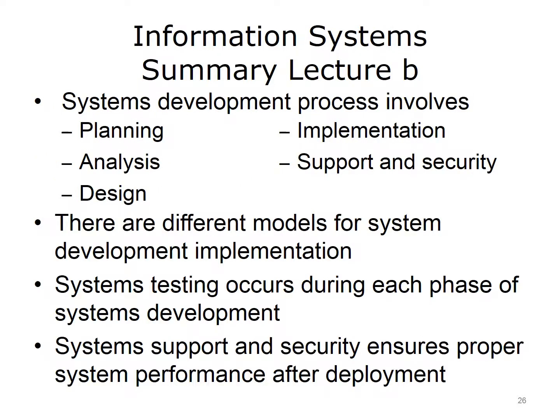This concludes Lecture B of Information Systems. In summary, the systems development process includes several activities such as planning, analysis, design, implementation, support, and security. There are different models for how this process is implemented. For example, the Waterfall model executes each activity completely before continuing to the next activity. Other models, such as the Spiral model, allow for more incremental feedback and iterative development between phases. Testing is part of all phases of the systems development process — initial plans and designs are tested, as well as the system itself once it is implemented. Testing occurs at the unit level, where units are small parts of the system, and on the system as a whole. Systems support and security ensures that the system is used effectively and securely once it is implemented.